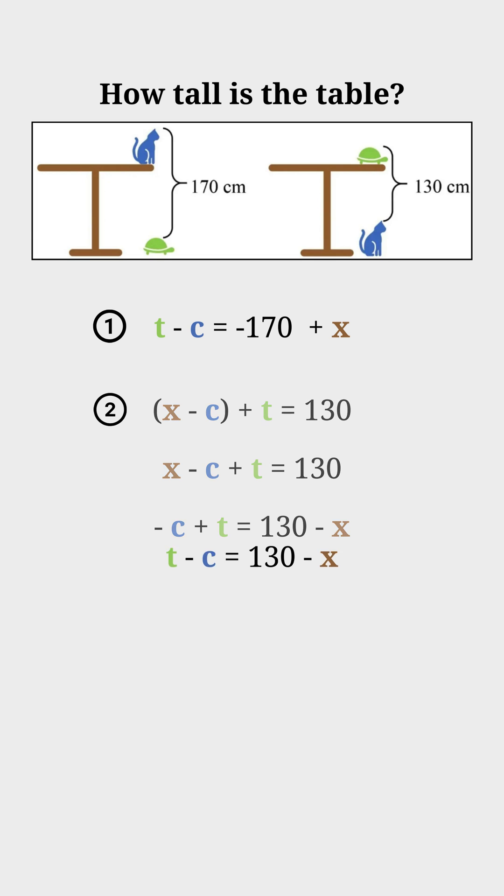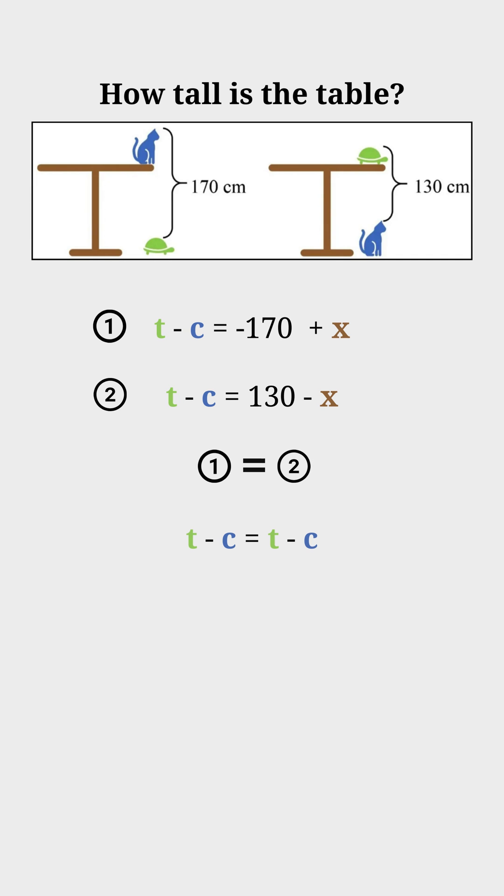Now we have two equations that are equal to T minus C, so we can equate them. T minus C is equal to T minus C, so we can say minus 170 plus X is equal to 130 minus X. Add 170 to both sides and add X to both sides to give you 2X is equal to 300. If you divide both sides by 2, then you get your answer.